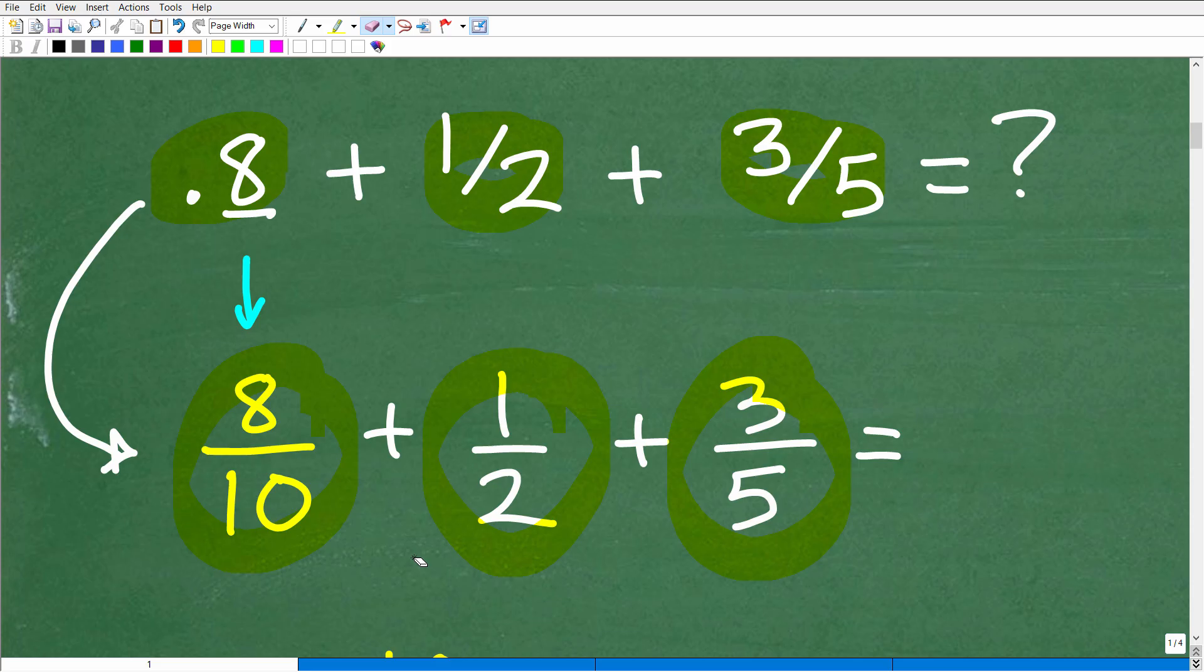So what do we need to do? Well, we're going to have to add these fractions. So how do you add fractions? Well, you can't add or subtract fractions unless the denominators, these bottom numbers, are the same. So we have a little bit of an issue here. This one's 10, this one's 2, this one's 5.